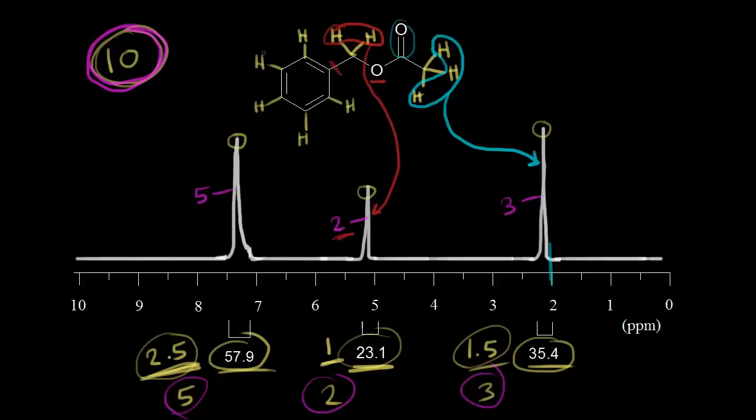Finally, we have five nearly equivalent protons on our ring. So they might not be exactly the same, but for this signal here, we have five protons giving us this signal. And it's a little bit more complex than the other ones. But notice where it is. We're in the aromatic region in terms of a chemical shift. And so this signal must represent these five aromatic protons on our ring.